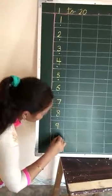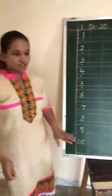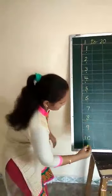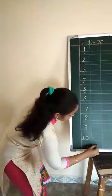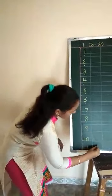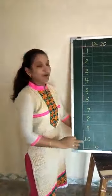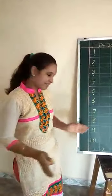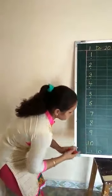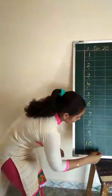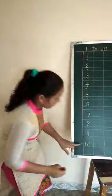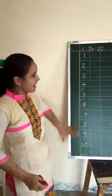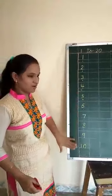Alright, children. In Junior KG, you wrote 1 and 0 separately. But here, you have to write 10 in 1 box. So I have written 10 in 1 box. So we have already revised 1 to 10.